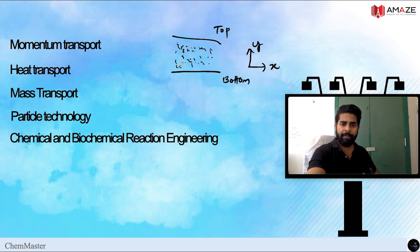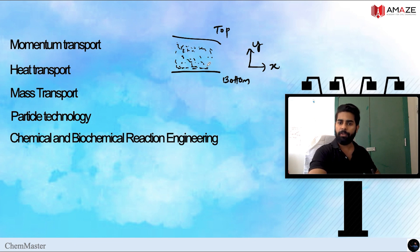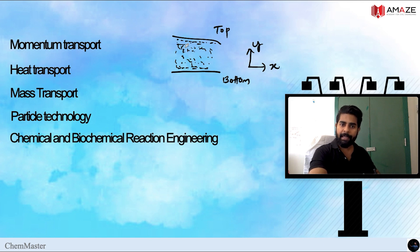The fluid has one layer adjacent to the bottom plate — that is the bottom layer of fluid — and one layer adjacent to the top plate — that is the top layer of fluid. In between, there are layers of fluid.